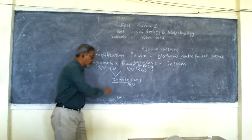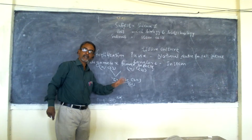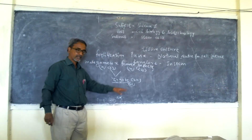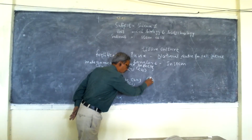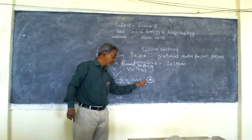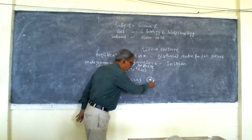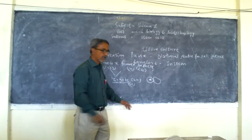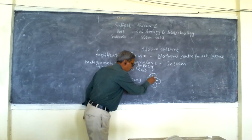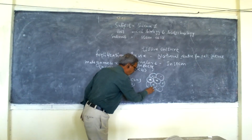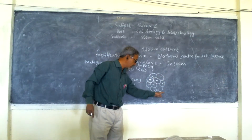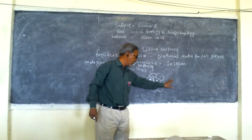After the zygote is formed, it undergoes mitosis — cell division. From a single cell, two cells are formed, then four, then eight, and this process continues. This zygote continuously divides mitotically without changing the chromosome number. All cells formed are undifferentiated and alike, forming an undifferentiated mass of cells. This undifferentiated mass of cells is called stem cells.